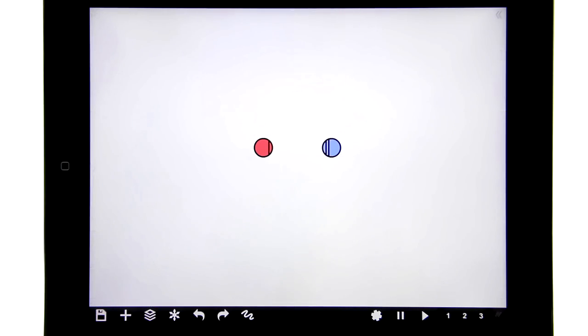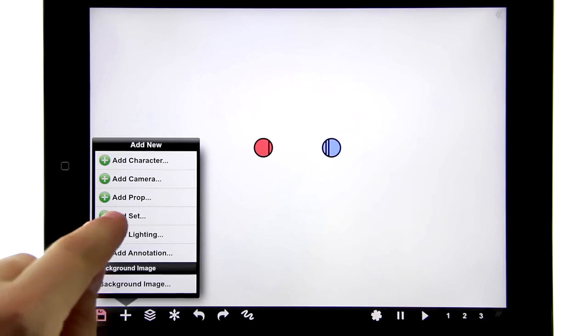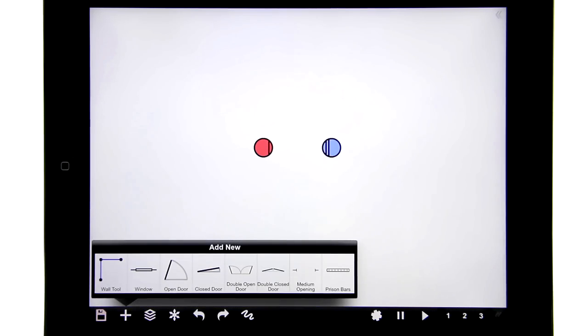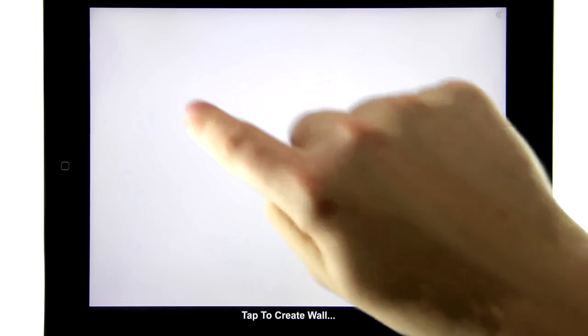I'm gonna click here and then add set, and that gives me some options. The first one is the wall tool. Then you simply tap to create a wall.